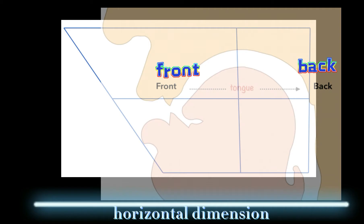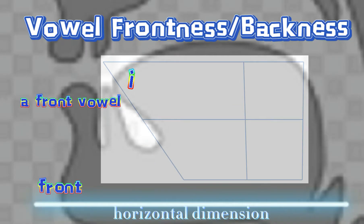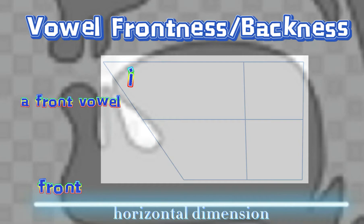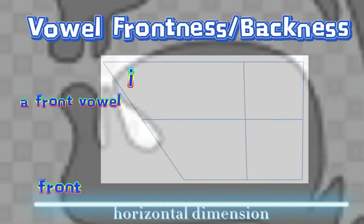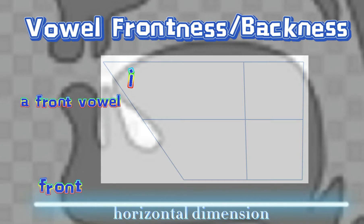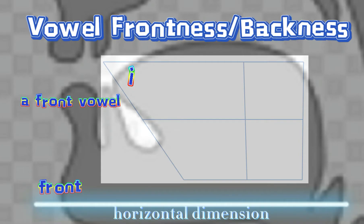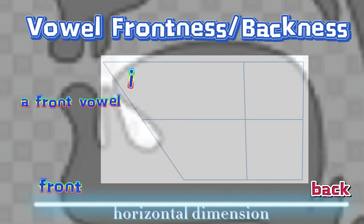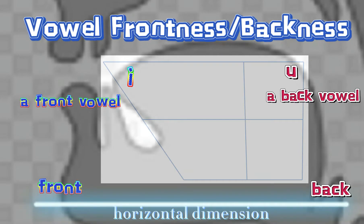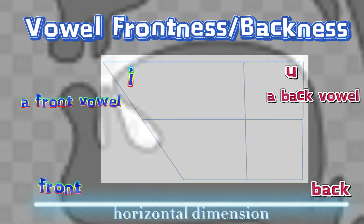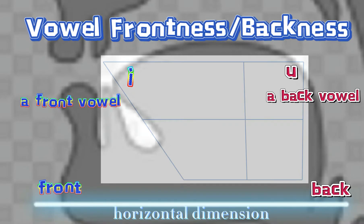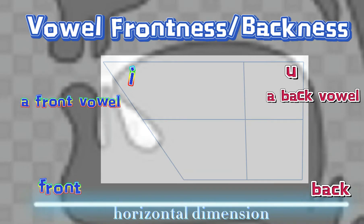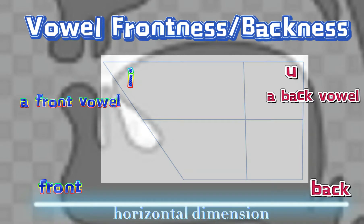For example, the vowel 'yi' is a front vowel because when we produce this vowel, our tongue is positioned forward in the mouth. Whereas the vowel 'wu' is a back vowel because when we produce this vowel, our tongue is positioned towards the back of the mouth.